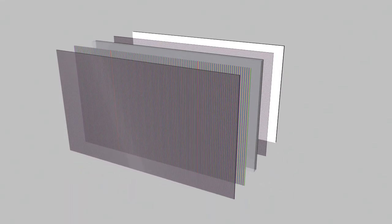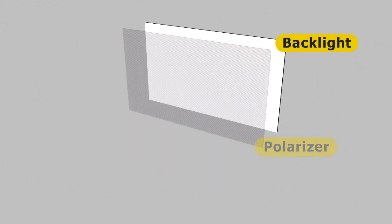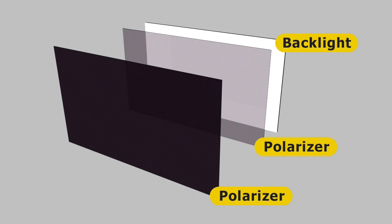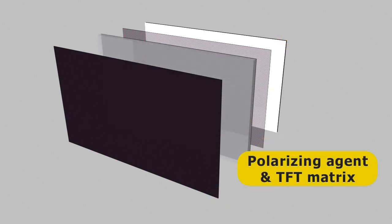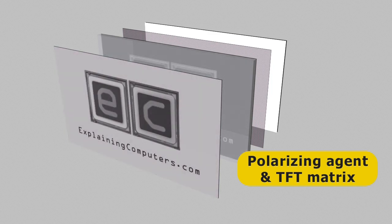All liquid crystal displays are built from several different layers, starting with a backlight and then a polarising filter. At the front there is a second polarising filter at 90 degrees to the first one, which initially prevents any light from getting through. Between the fixed polarising filters there is a layer of liquid crystal polarising agent and a matrix of thin film transistors. When power is applied, these transistors selectively reorientate the polarising agent, allowing some light emerging from the first polariser to pass through the one at the front.